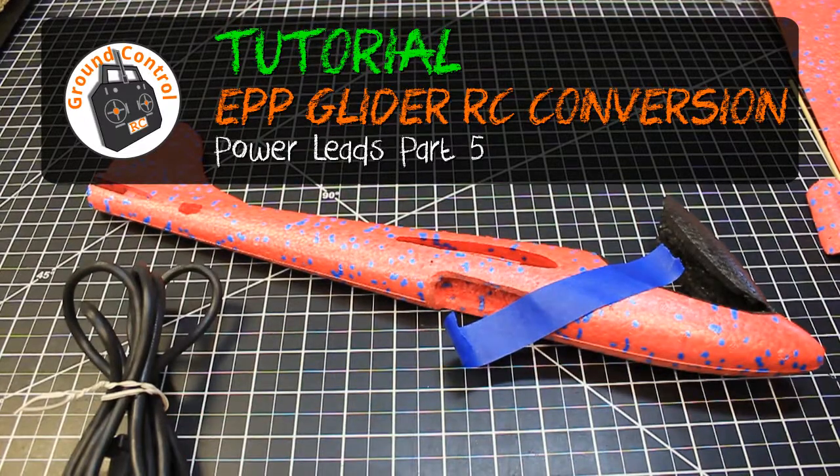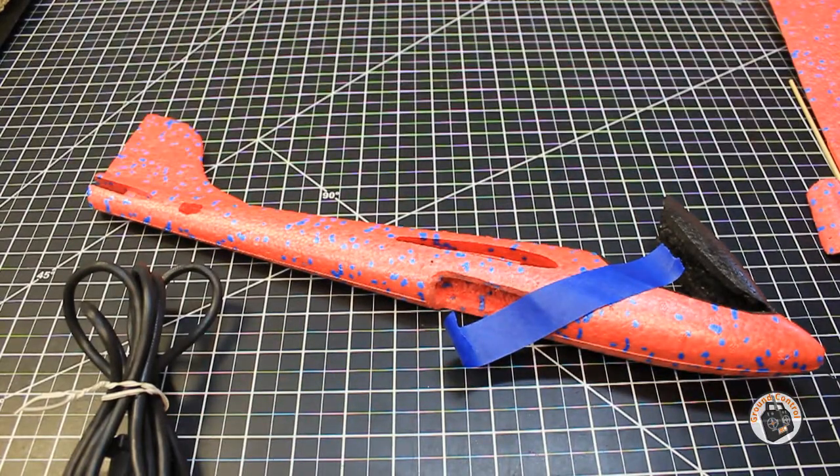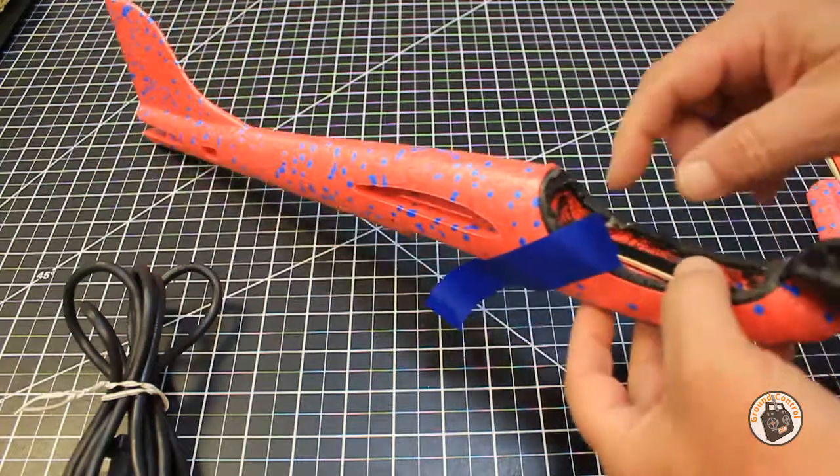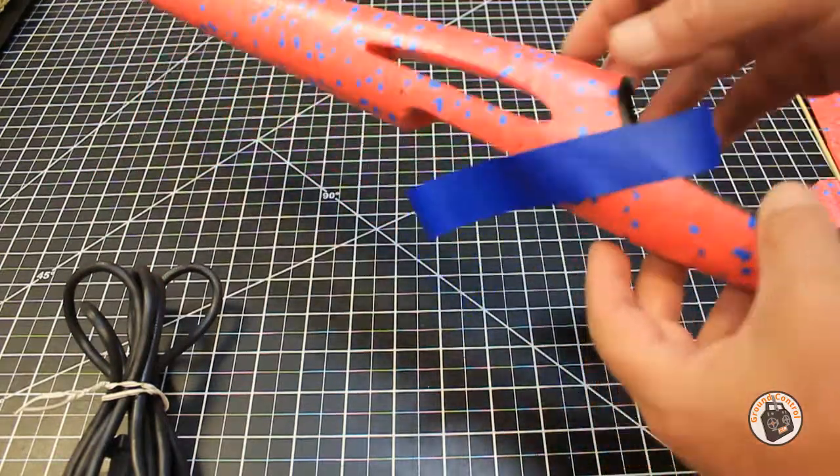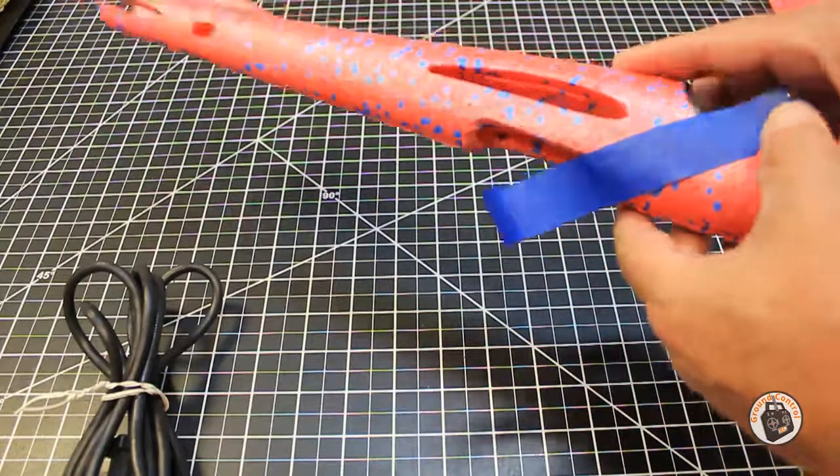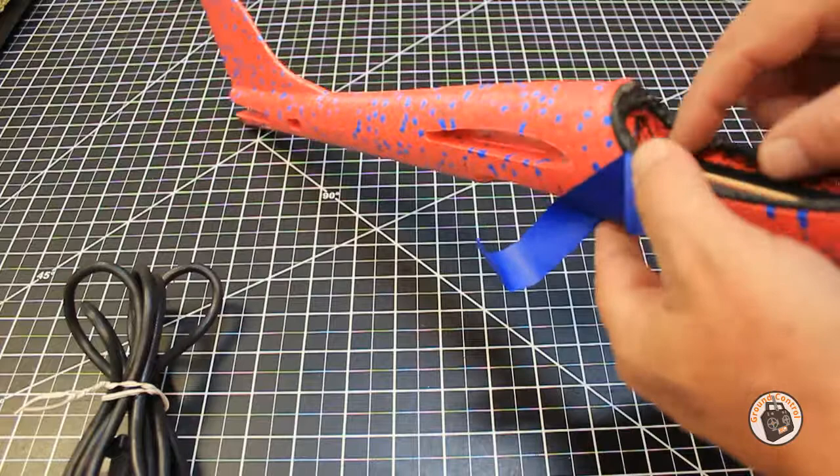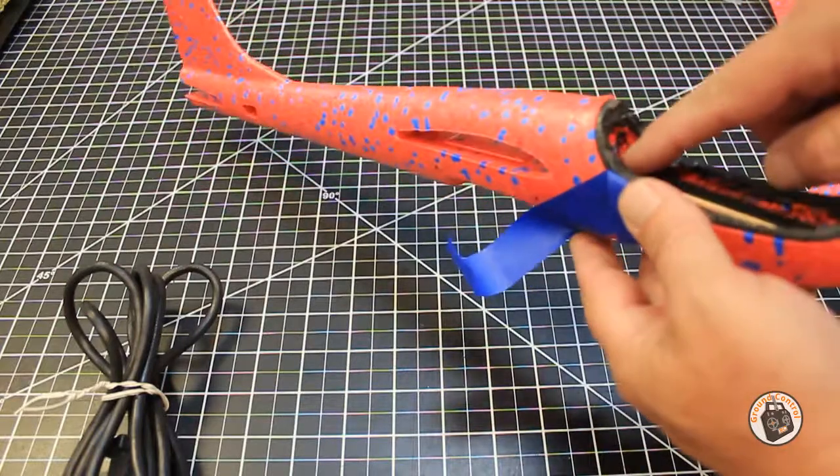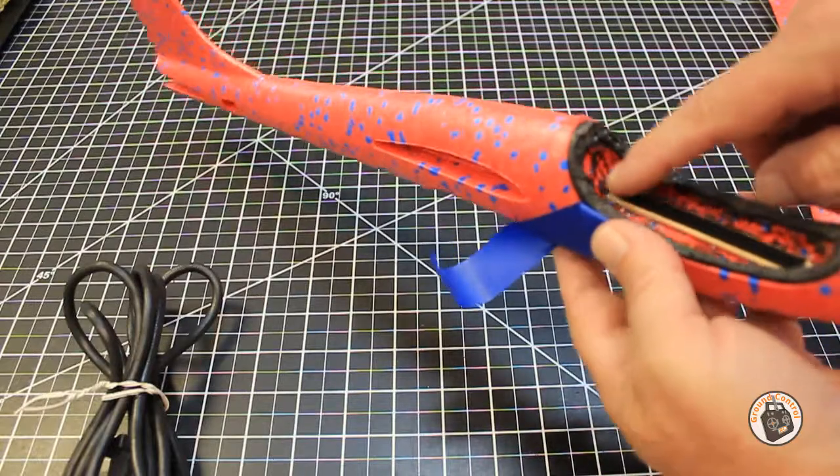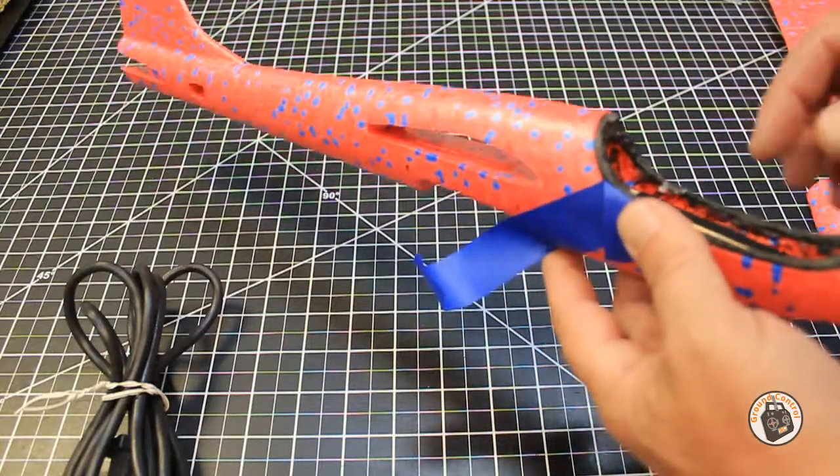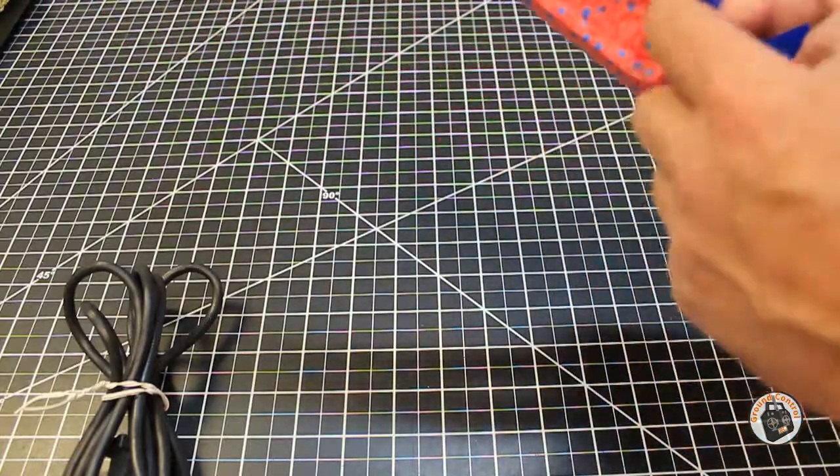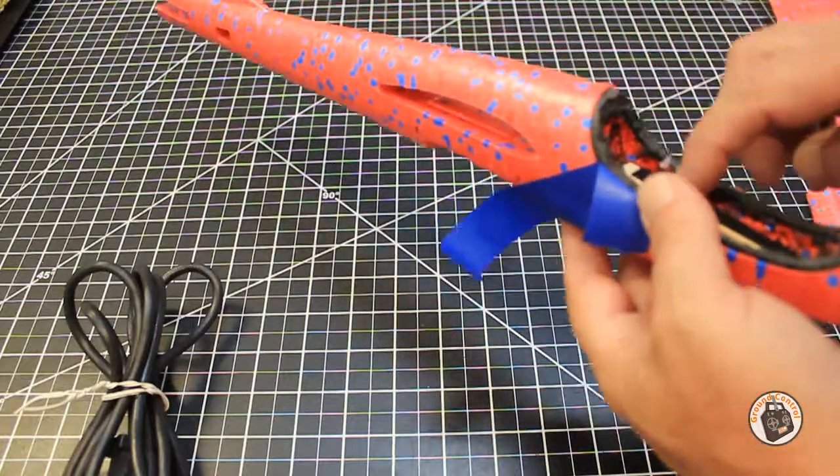Okay, we're ready for part four on this EPP glider project, and what I'm getting ready to do now is cut a hole from the bottom of our electronics compartment into about the middle of the inside of our canopy of our fuselage. The reason I'm doing that is because we need to be able to run our power cables up from our speed controller up to our battery.